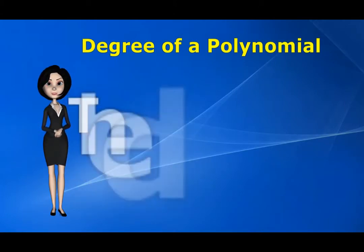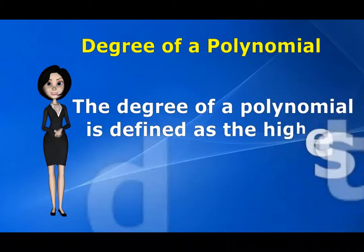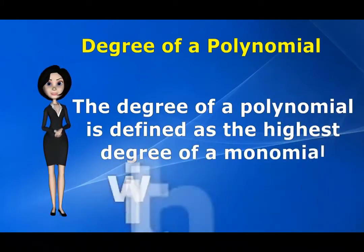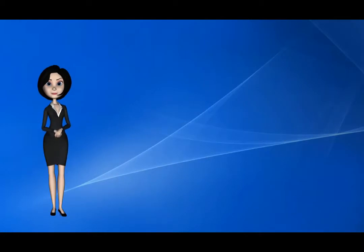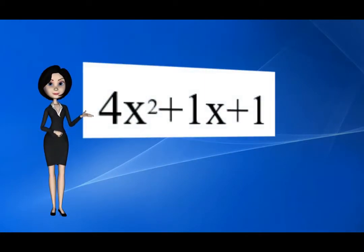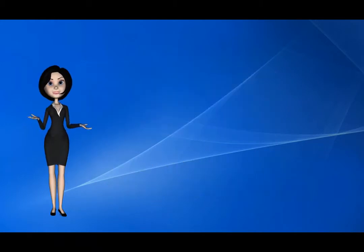The degree of a polynomial is defined as the highest degree of a monomial within a polynomial. For example, in this polynomial the highest exponent of the variable is 2. So the degree of this polynomial is 2. Let us see another example.